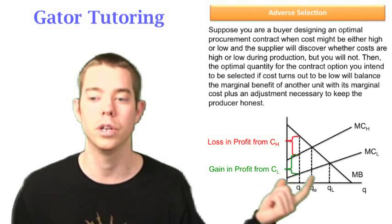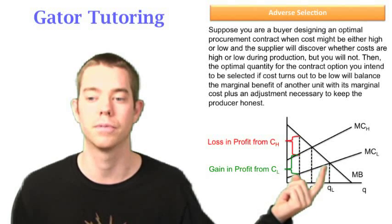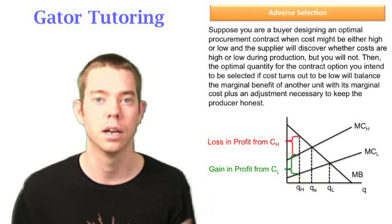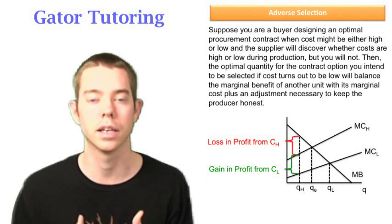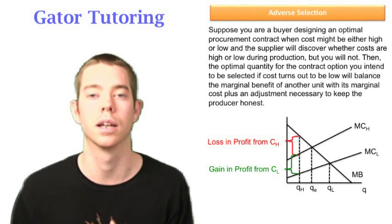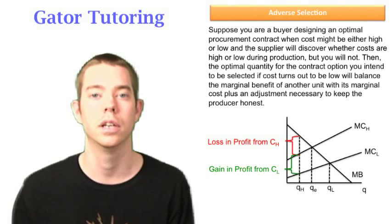Because like we said, we do when producing Q_L, we do balance the marginal benefit with its marginal cost. There's no plus any additional to keep the producer honest. So again, memorize this graph, it will help you a lot and learn how to translate the words into the picture.